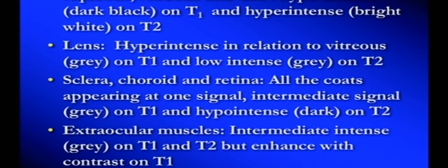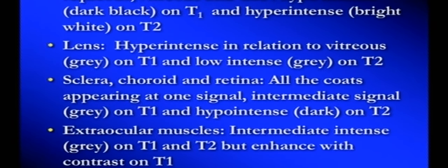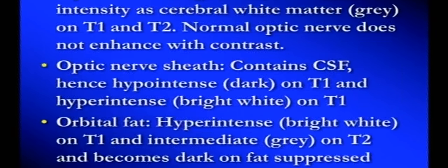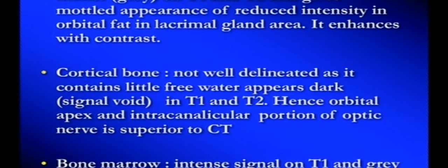The various anatomical structures and their characteristics on T1 and T2 will be described in a reference I'll provide at the end — it is freely downloadable. One important point: cortical bone contains little free water, so it always appears dark (hypointense) on MRI. This means that for suspected calcification or fractures, MRI is not a good modality — CT scan is better, where calcification appears hyperdense.